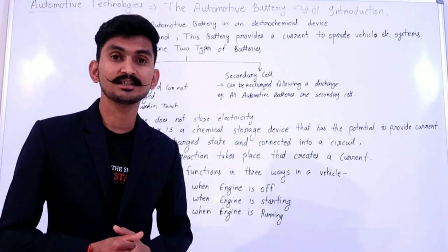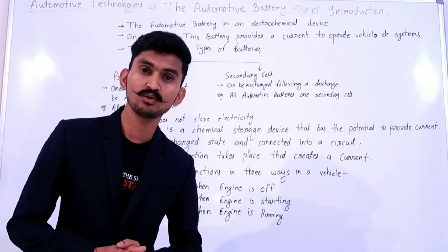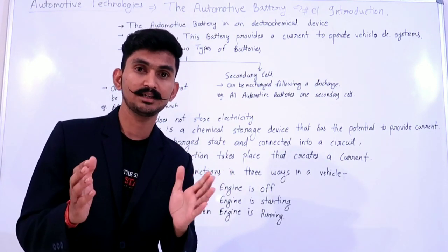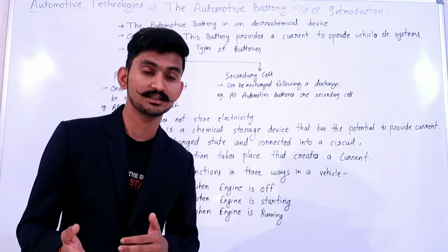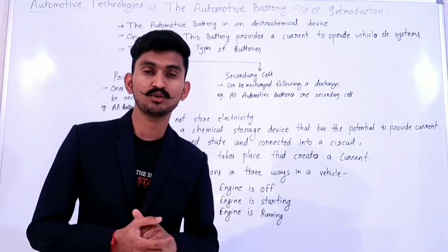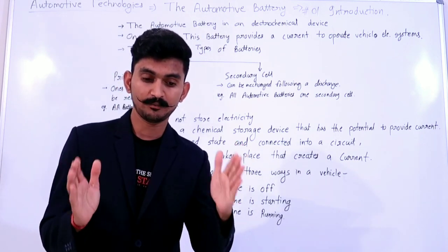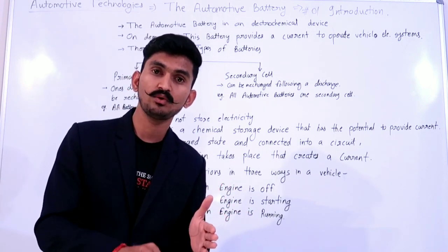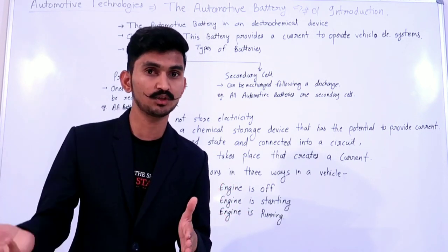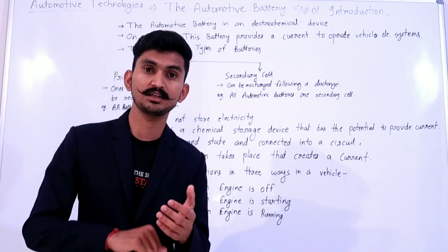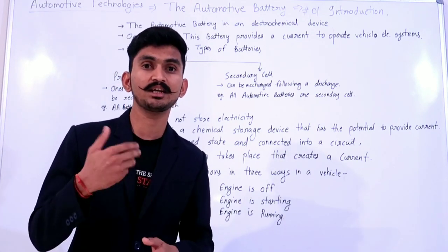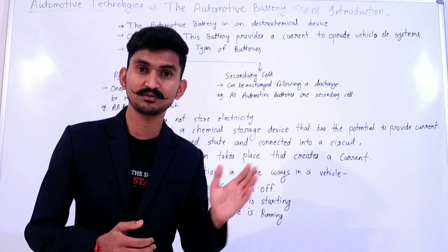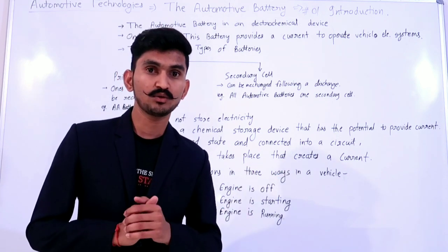The automotive battery is an electrochemical device. We all know that the automotive battery is an electrochemical device. Electrochemical device means that a battery's chemical energy is converted into electrical energy. That's why it is called an electrochemical device.